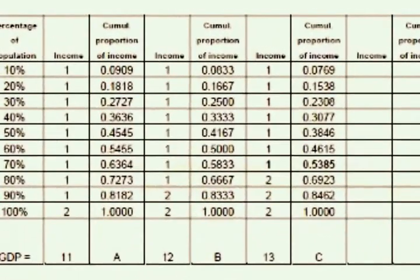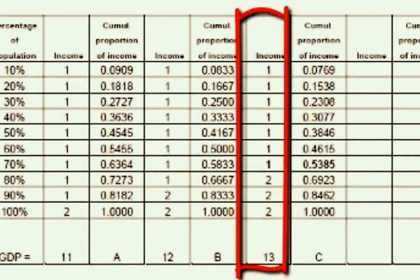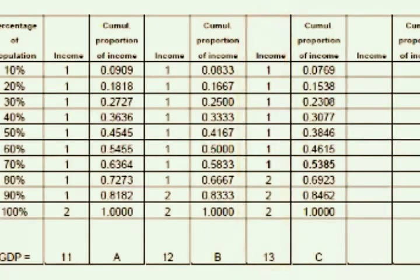Notice what happens with modern sector enlargement — we now have three people in the modern sector. If somebody leaves the rural sector earning $1 and moves to the urban sector earning $2, the GDP increases from 12 to 13. Now 70% of the population earns $7 out of 13, which is 53.8% of the income.